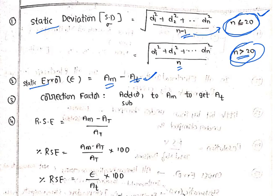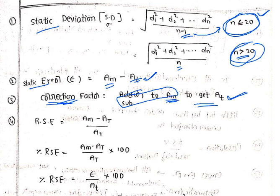Third one: correction factor formula. Correction factor is the value you add or subtract to the measured value to get the true value. So when you are adding or subtracting a number to the measured value, you will get the true value.